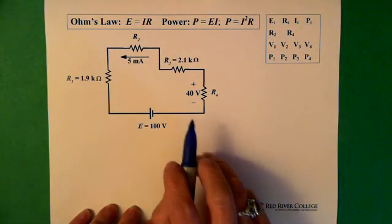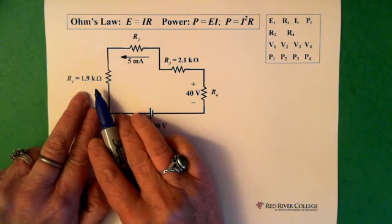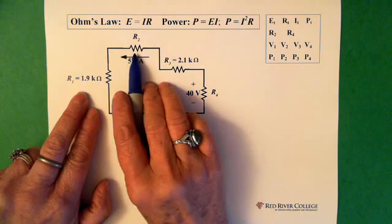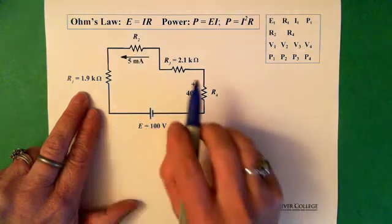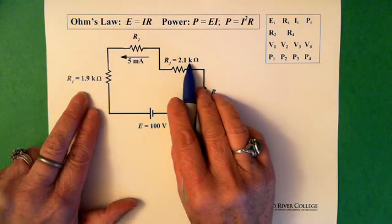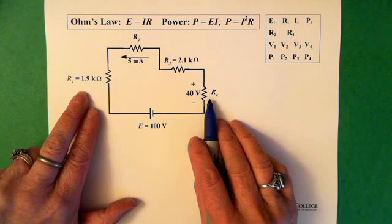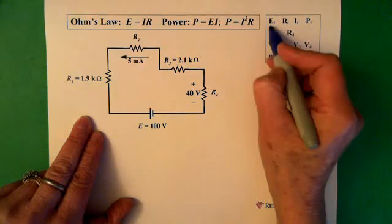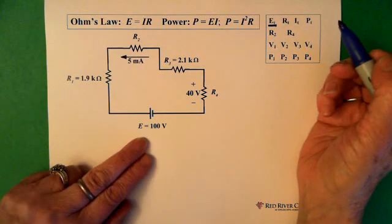We can see that across resistor 1 is 1.9 kilohms. We're seeing that there's 5 milliamps going through resistor 2. Resistor 3 is 2.1 kilohms and we see that we have 40 volts across resistor 4. And we have a total voltage, which we now know, of 100 volts.